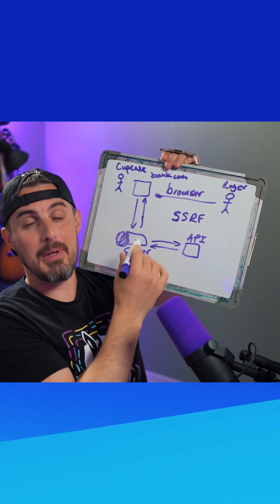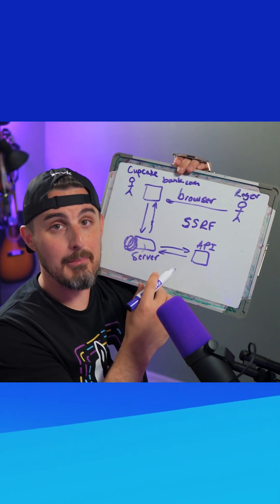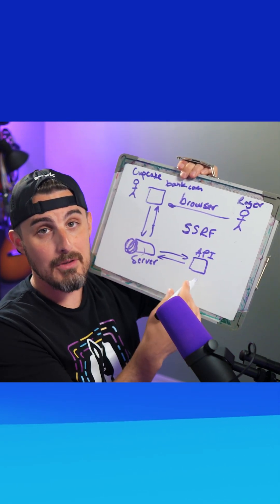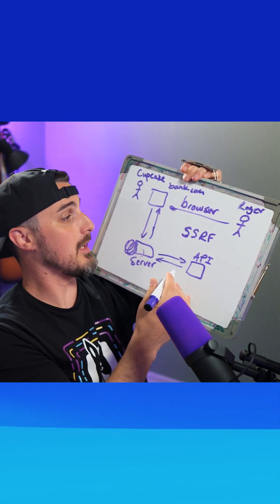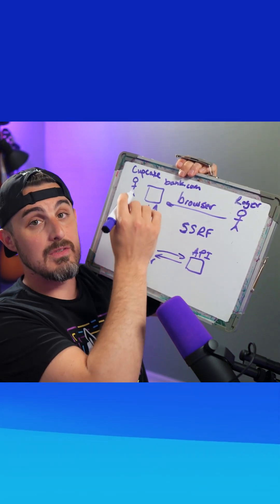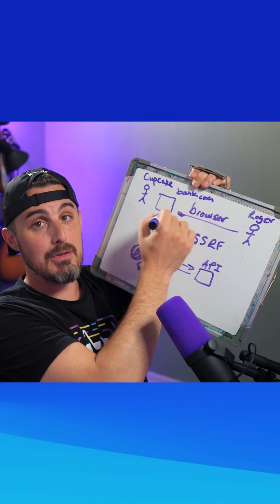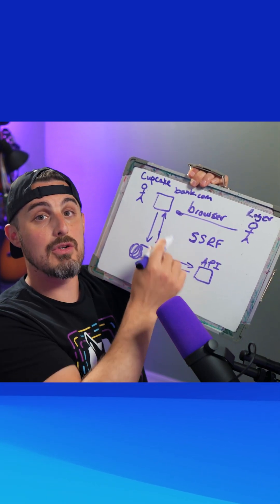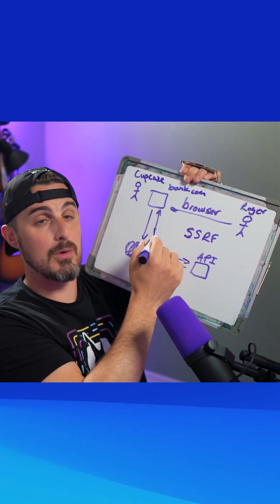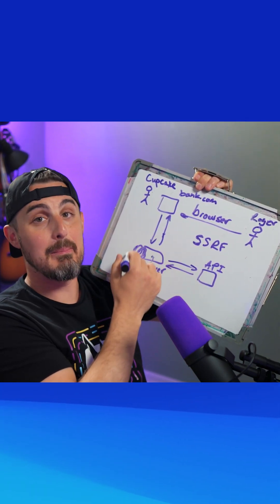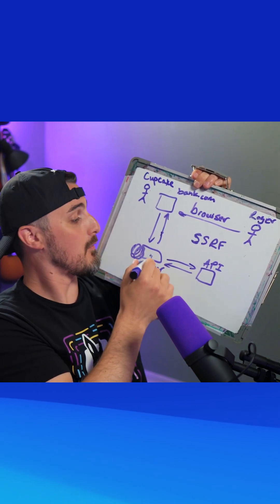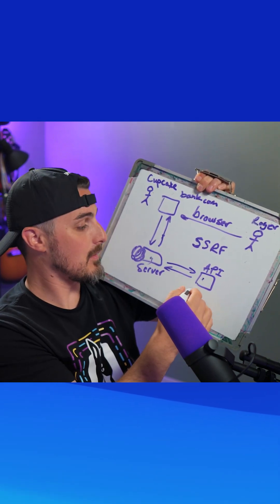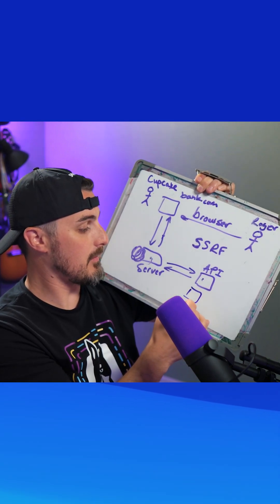So the difference between cross-site request forgery and server-side request forgery is: CSRF is happening more so in the browser and directly to the main server, whereas server-side request forgery is happening behind the scenes on the back end, from one server to the other — whether it's an API or some other service.